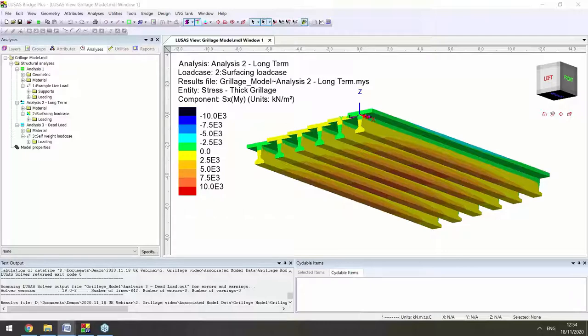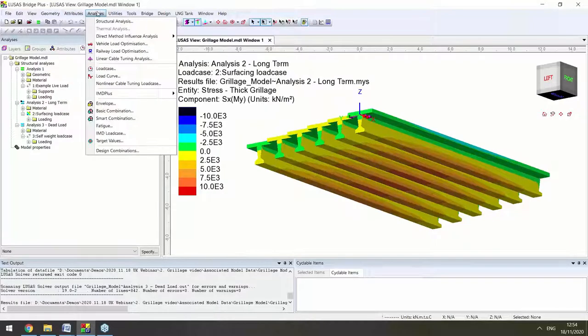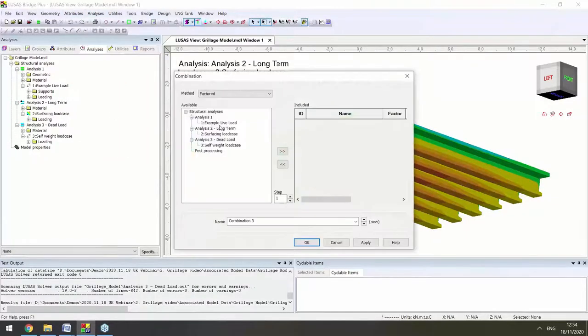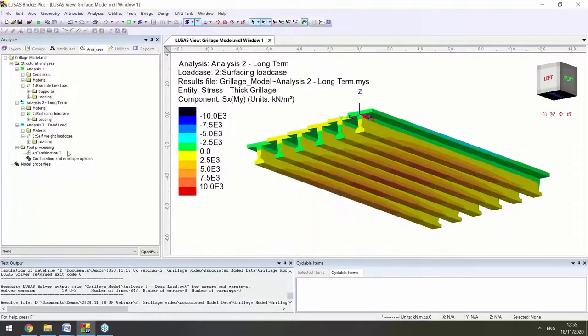Yeah. So one of the advantages of using the different analyses with the different materials within one model file is that we can go to, for example, analyses basic combination, and we can add the results from the different analyses together with any factors that might be appropriate for doing ultimate limit state analysis, for example. So we can then add those together using the principle of superposition, even though we've got different material properties in the different analyses.